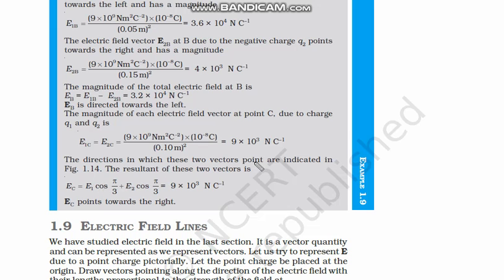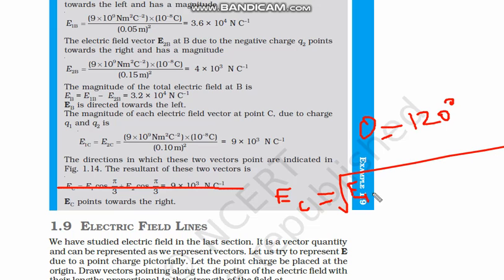Now, the direction in which these vectors point are indicated in this figure and the angle was theta was 120 degree. And yesterday itself, I showed you that how to calculate. Forget about this thing. Let us calculate this. How can we calculate this? So, from vector law of parallelogram, ec is equal to under root e1c square plus e2c square plus 2e1c e2c and cos theta.